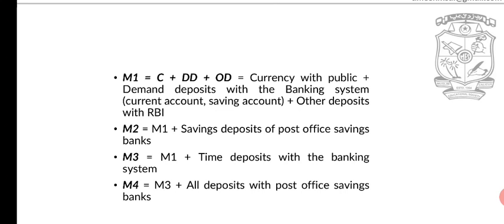M1 is equal to C plus DD plus OD, where C denotes currency with the public, DD denotes demand deposits with the banking system — including current accounts and savings accounts — and OD denotes other deposits with RBI. So M1 includes currency with the public, demand deposits with the bank, and other deposits with RBI.